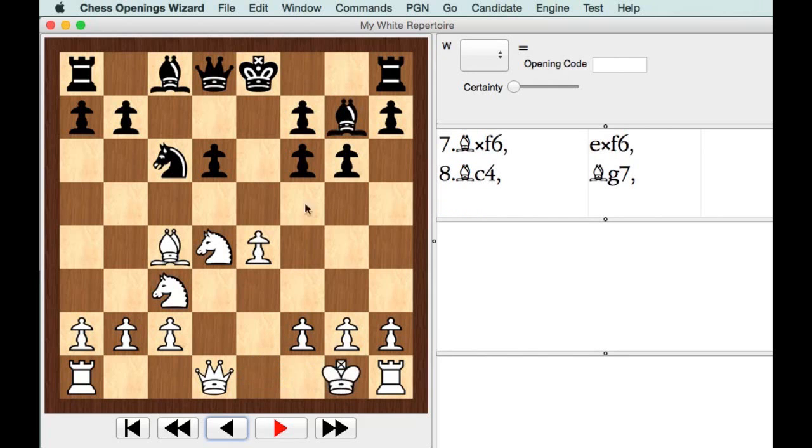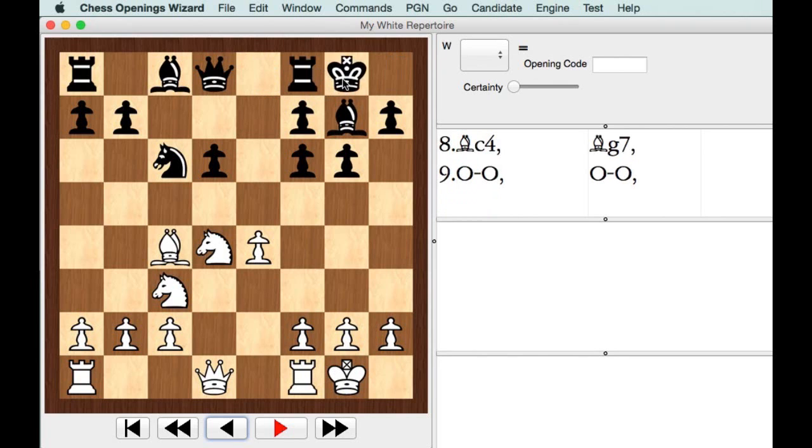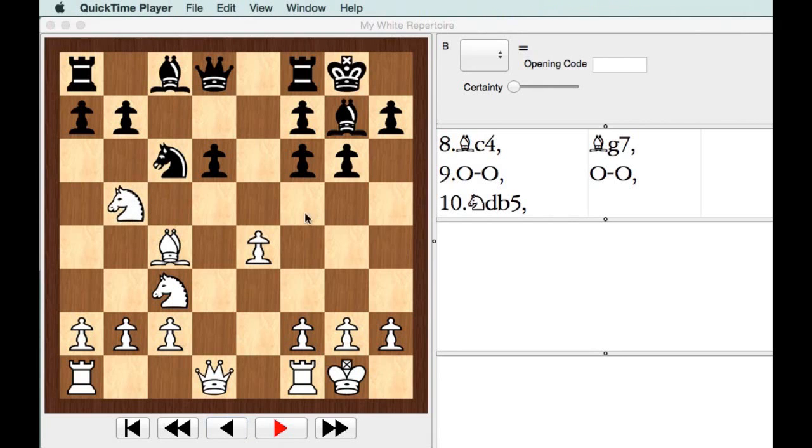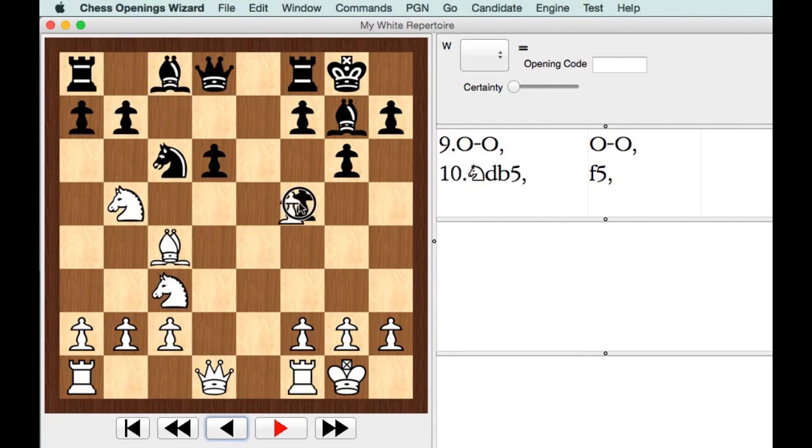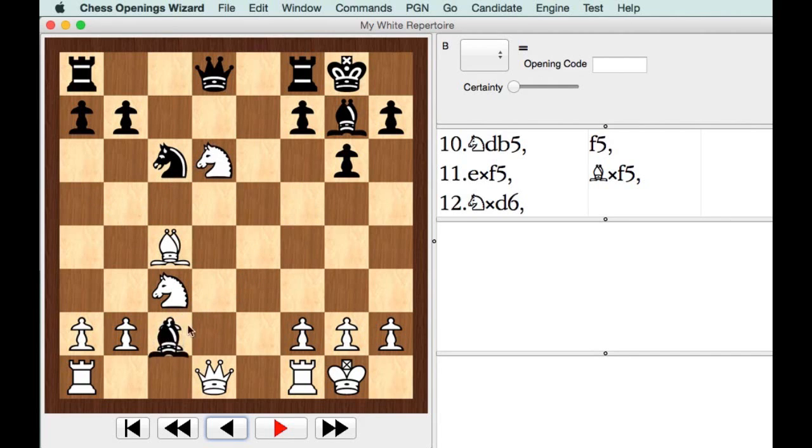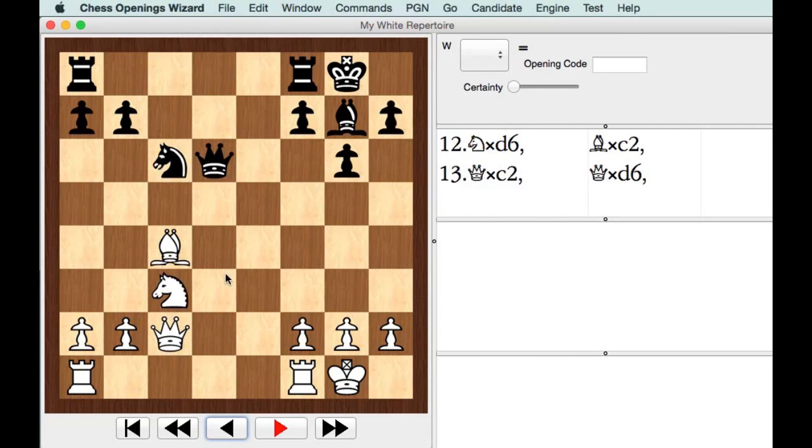And after Bg7, white castled, black castles, and then Ndb5, trying to pick up that pawn on d6. So what often happens here is that black plays f5, and exf5 is kind of the way to go here. Bishop's going to take back on f5. And now, if he tries to win the pawn on d6, you get to play Bxc2. And if white goes ahead and recaptures on c2, black's going to pick up the knight on d6. And then he's going to be able to play Nd4 with a pretty good position. That's no good, so let's mark that as a good position for black, or slightly good for black.